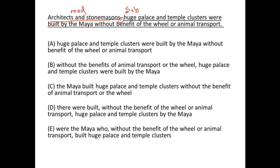Huge palace and temple clusters — they cannot be a group of people, so we don't have a subject there. The Maya is a group of people, so architects and stonemasons can modify the Maya. Without the Maya, we don't have a noun and the subject is missing.